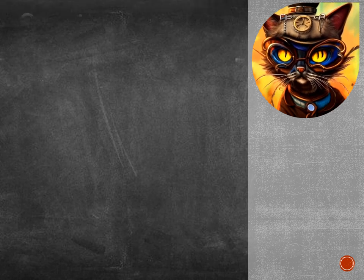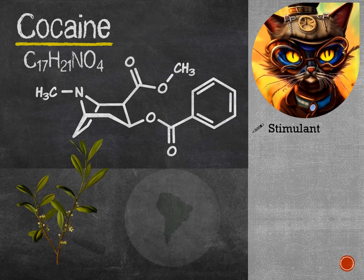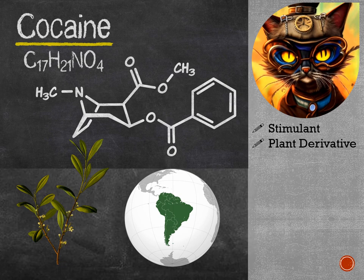First, we will talk about cocaine. Cocaine is a powerful stimulant drug from the leaves of the coca plant, which is native to South America. It is a Class A substance with a high potential for abuse.